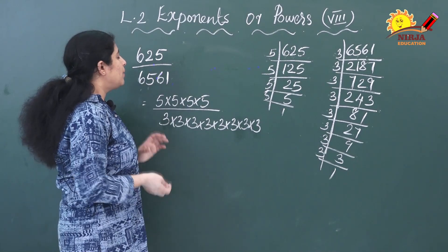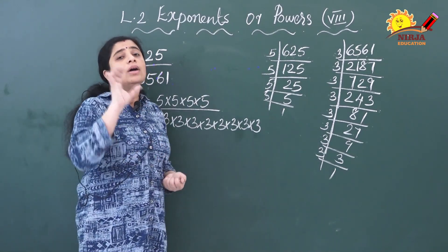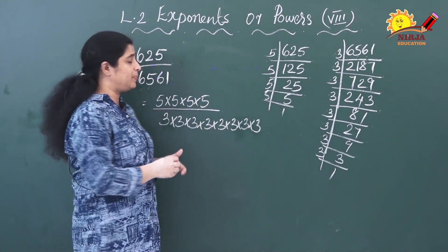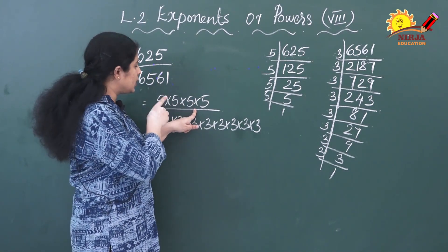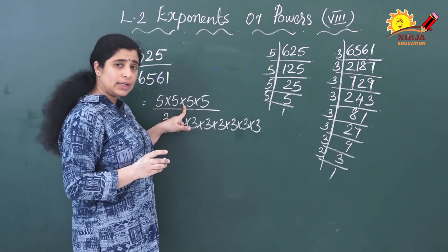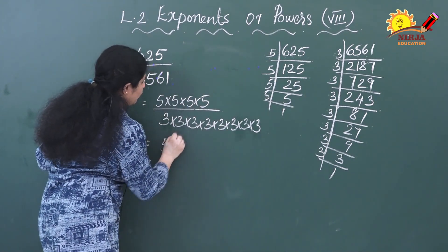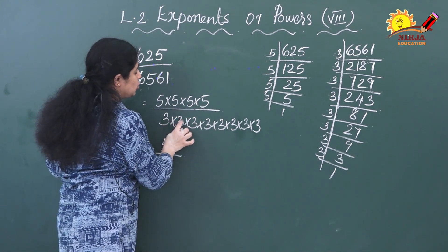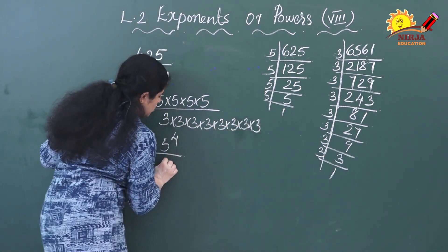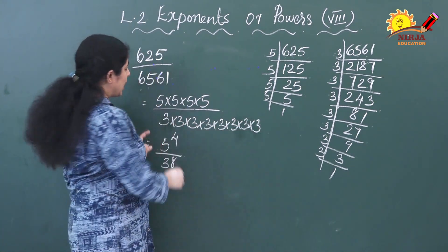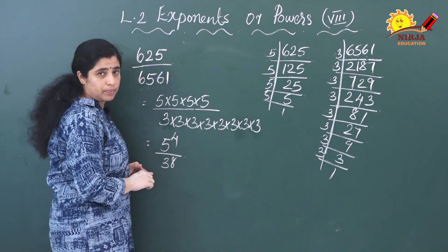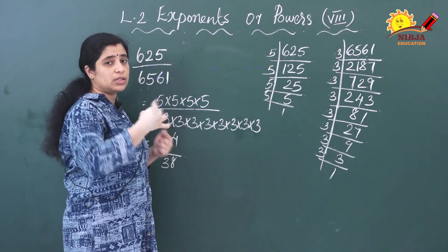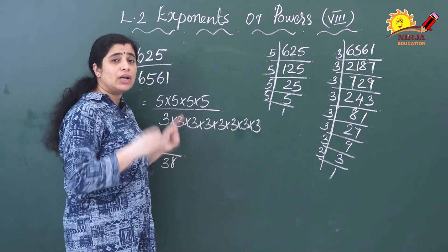The problem is that in a rational number, the index — that means the exponents — of the numerator and denominator should be the same. Here the numerator is 5 raised to 4 and the denominator is 3 raised to 8. You can't write rational numbers this way; the exponents must match. So, as in the previous case, we will do grouping.